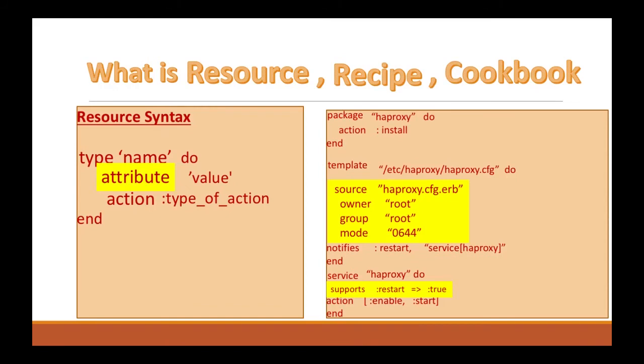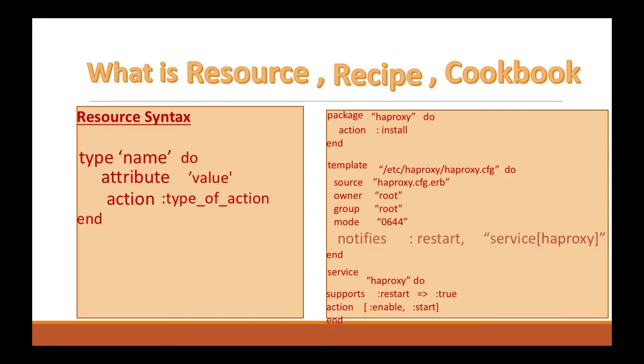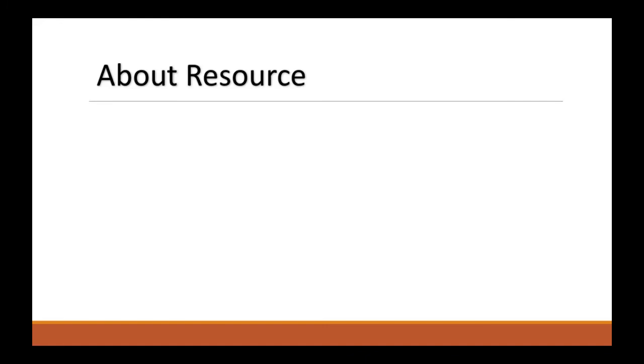Each resource can also have some parameters or attributes. Those are in between the keywords do and end. The parameters or attributes define some additional details about the resources. Next important component is action. Each resource has its own set of actions that will put the resource to its desired state. Some other properties are sending the notification. The resources can also send notifications to other resources.